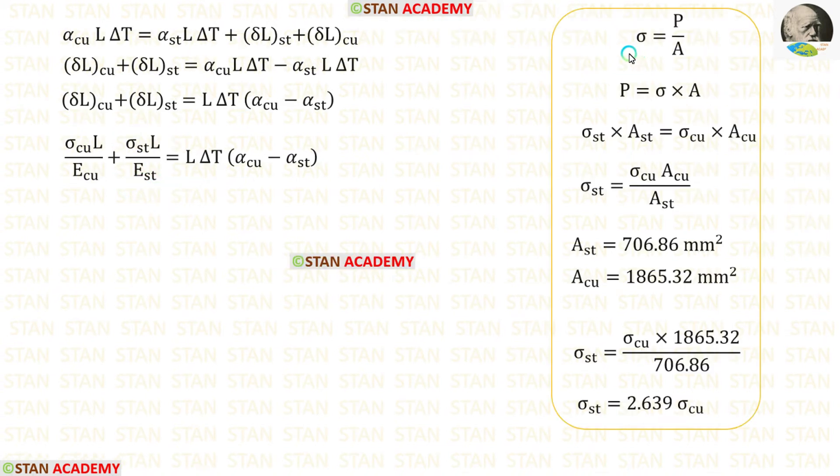We know that sigma is equal to P upon A, so P is equal to sigma into A. The load P will be same in both of the materials. So we can write sigma ST into A ST is equal to sigma Cu into A Cu.